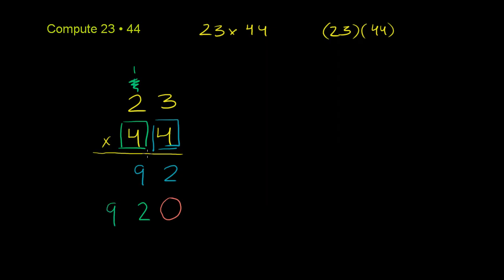What we've figured out so far is 4 times 23 is 92, and this green 4 times 23 is 920. That's because this green 4 actually represents 40. It's in the tens place. So when you multiply 44 times 23,